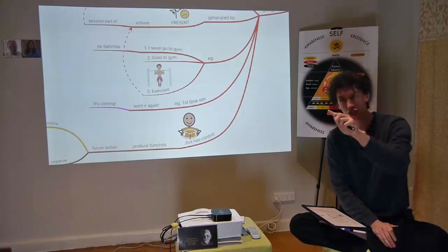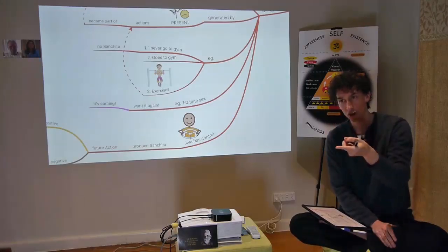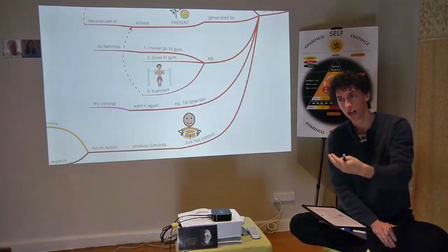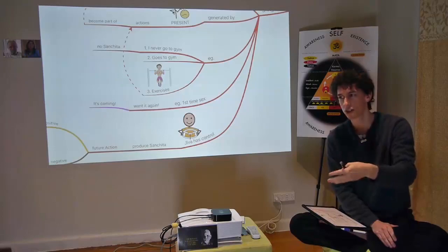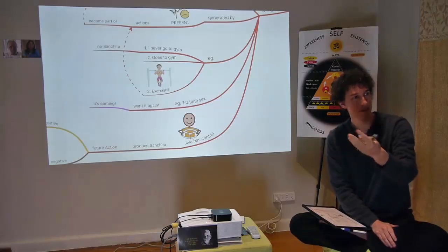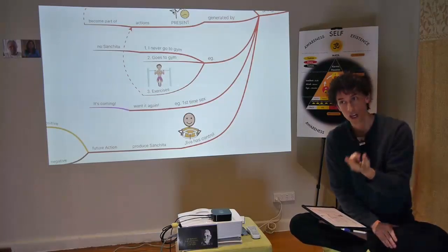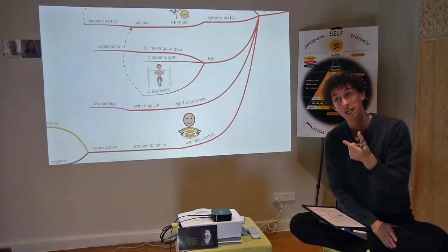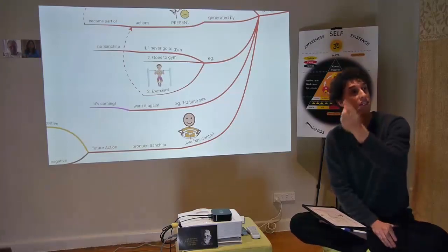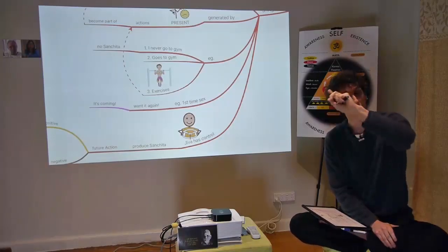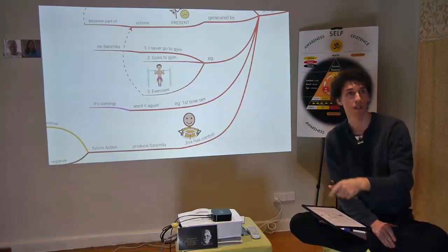It goes into Sanchita, and when the right situation occurs — the right person appears — that triggers the Sanchita, and the Sanchita expresses itself as Prarabdha.